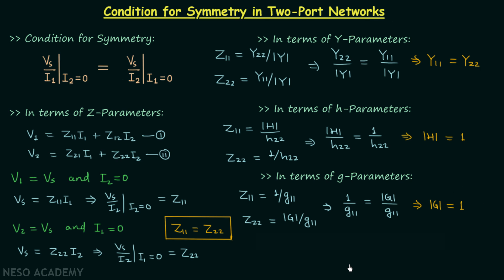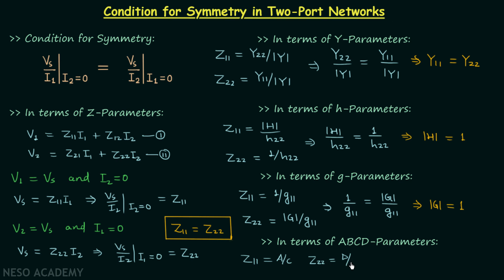Finally, the condition for symmetry in terms of ABCD parameters: Z11 = A divided by C, and Z22 = D divided by C. Setting Z11 = Z22, A over C must equal D over C, so parameter A must equal parameter D. This is the condition for symmetry in terms of ABCD parameters. Remember all these conditions — and with that, this lecture ends.